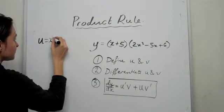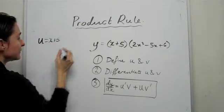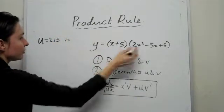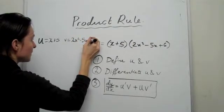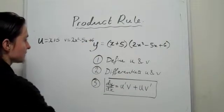U is equal to X plus 5 and let V equal to 2X squared minus 5X plus 6. Hope you can see that.